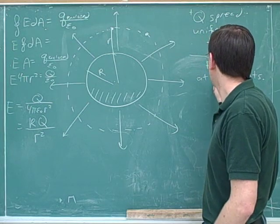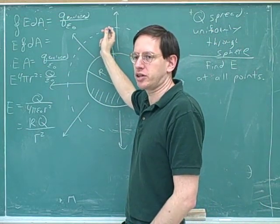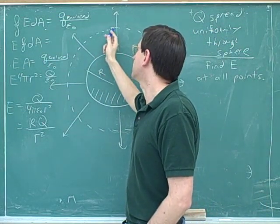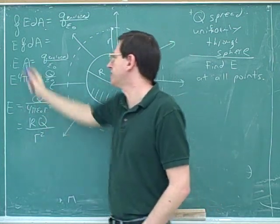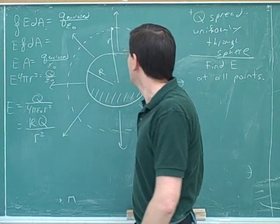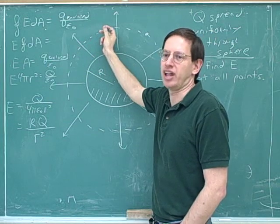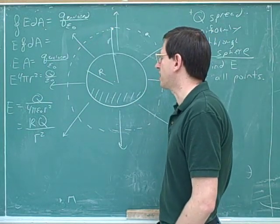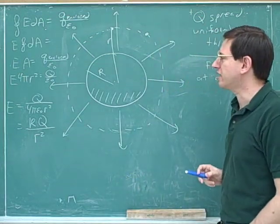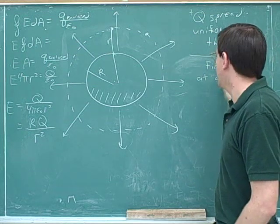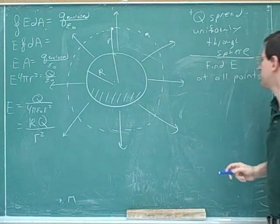So to summarize the key steps: pick a point in space where you're trying to find the electric field, and draw a symmetrical Gaussian surface through it — something symmetrical with respect to the source charges — otherwise you won't be able to take E out of the integral. It's a good habit to draw the object with a solid line and the Gaussian surface with a dashed line, and be very careful about whether you're using uppercase or lowercase r.